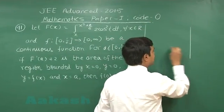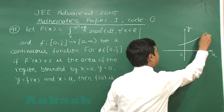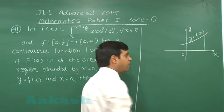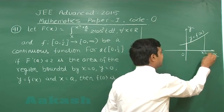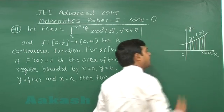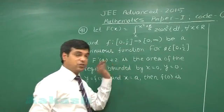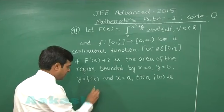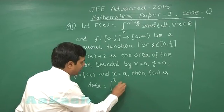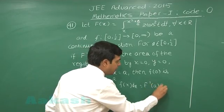The area enclosed by a curve y equals small f of x within the boundaries x = 0 to x = a, that is this portion, it is given to me capital F'(a) + 2. So starting with it, area is given to me integral 0 to a small f(x) dx equals F'(a) + 2.